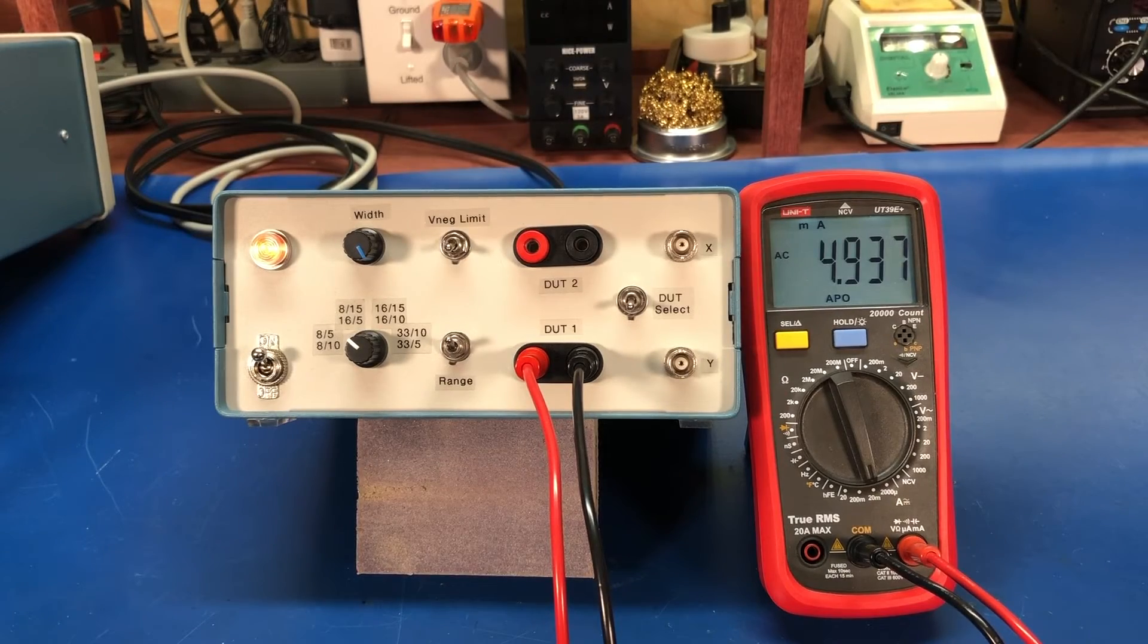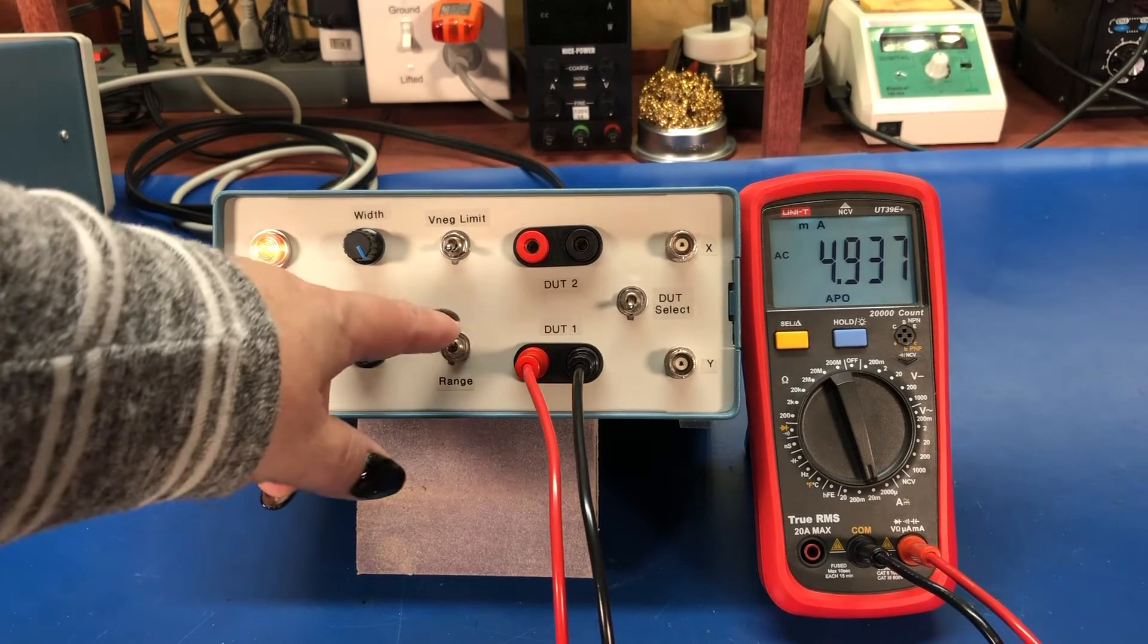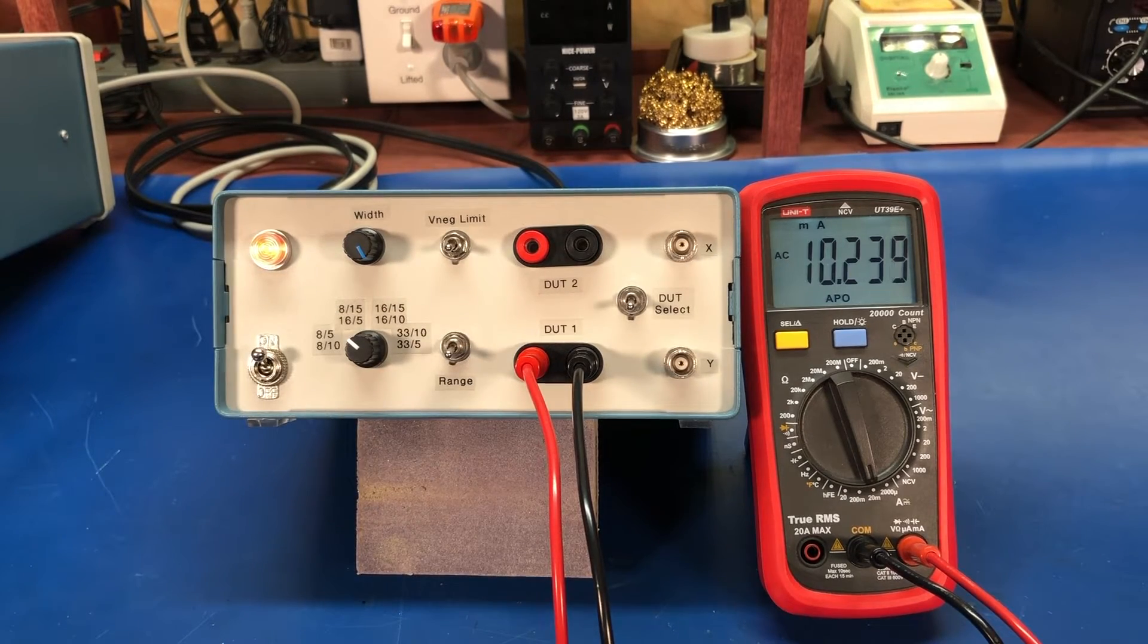All right I switched over to my UNI-T UT39E+. If we go to the first range it says 10 milliamps and we've got 10.2.